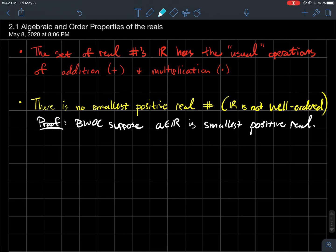So by way of contradiction, that's what this BWOC means. Suppose that there was some real number A that is the smallest positive real number. Wait a minute, what if you just took half of that? Well, one half of A is still a real number. It's still positive since you just multiplied it by half, and it's even smaller than A was. So that's your contradiction. Boom, done.